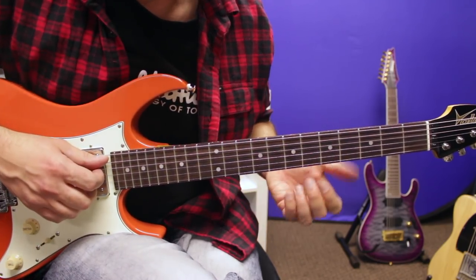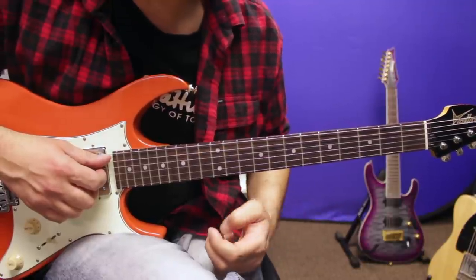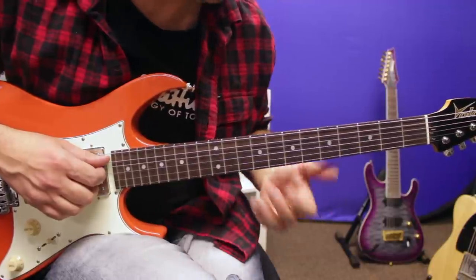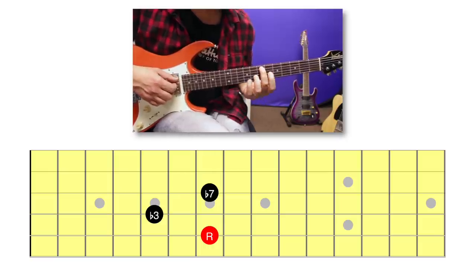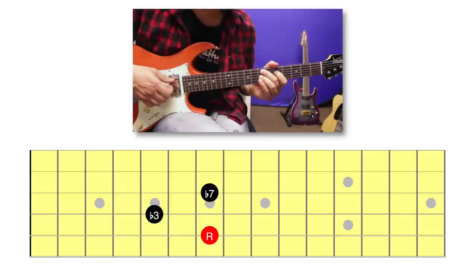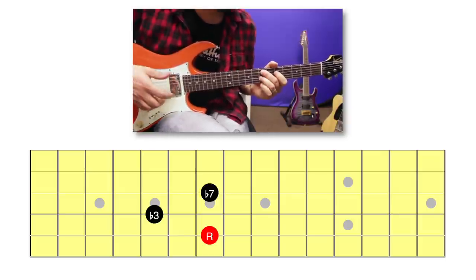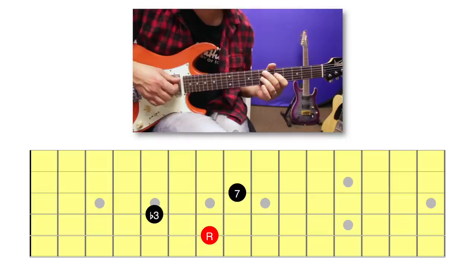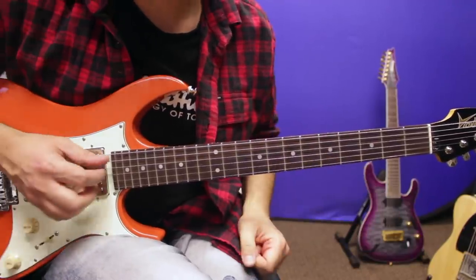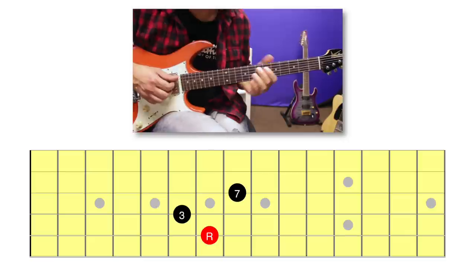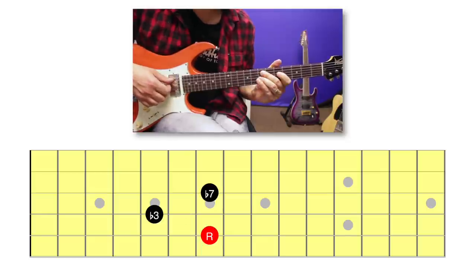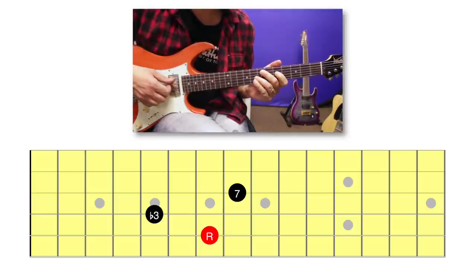Now there are two shells with a minor third. One of them has a major seventh, the other a minor seventh. The most common one has a minor seventh: root, minor third on the fifth fret instead of the sixth, and a minor seventh. That's the minor seven shell. And then we have a variation with a major seventh - one fret higher - which is very colorful. That's the minor-major seven shell. So we have four shells: major seven, dominant seven, minor seven, and minor-major seven.